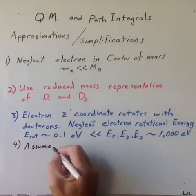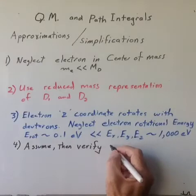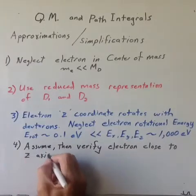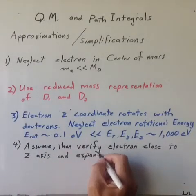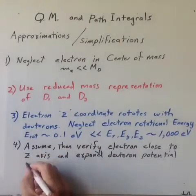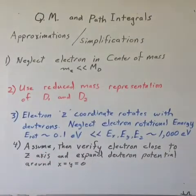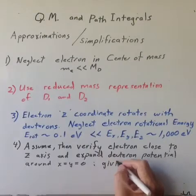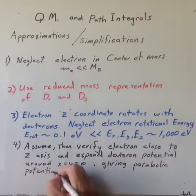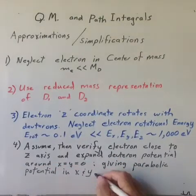Number four, we will assume, then verify, that the electron stays close to the z-axis through the two nuclei so that we can expand the deuteron potential around x equals zero and y equals zero. This gives a parabolic potential with a variable force constant along the z-axis.